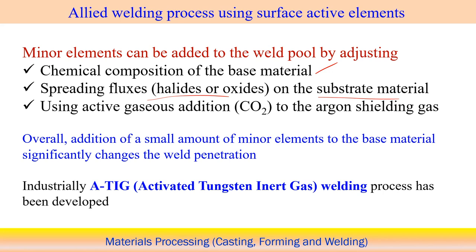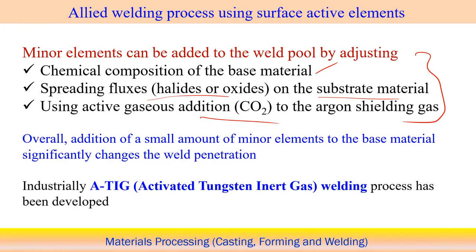A third option is to add surface active elements directly with the shielding gas. A small quantity of CO2 can be added with the argon shielding gas, where CO2 acts as a surface active element. The quantity must be carefully defined through experimental data to understand exactly how much is required to increase the depth of penetration. These are three different ways to incorporate surface active elements during the welding process.